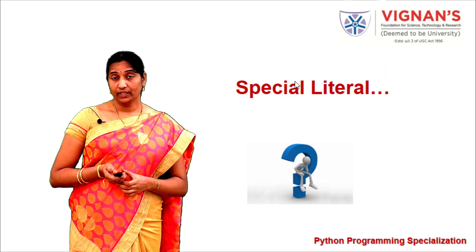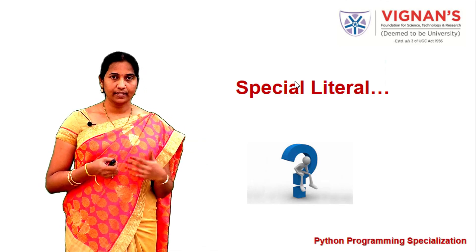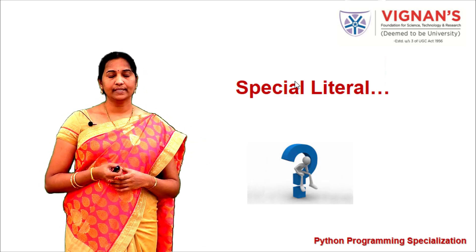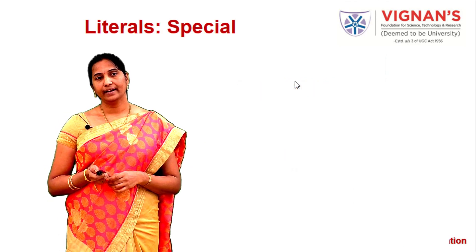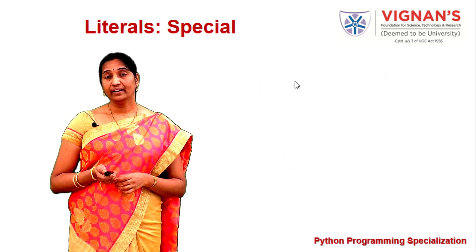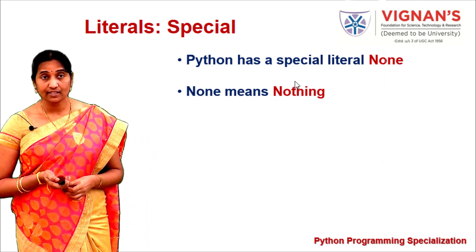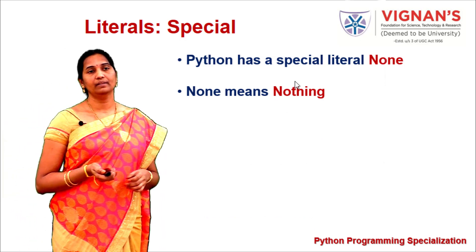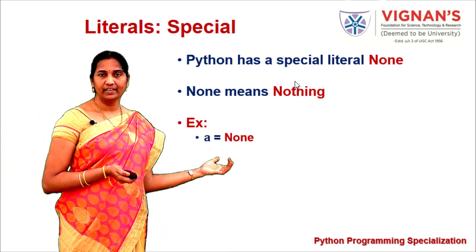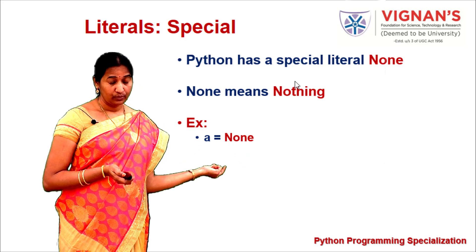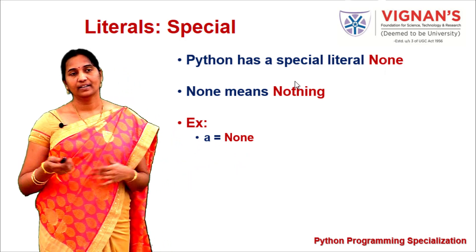In addition to numeric, string, and boolean literals, Python supports one special literal: None. None indicates nothing and is treated as a special literal in Python. For example, assigning None to variable a indicates it holds no value.